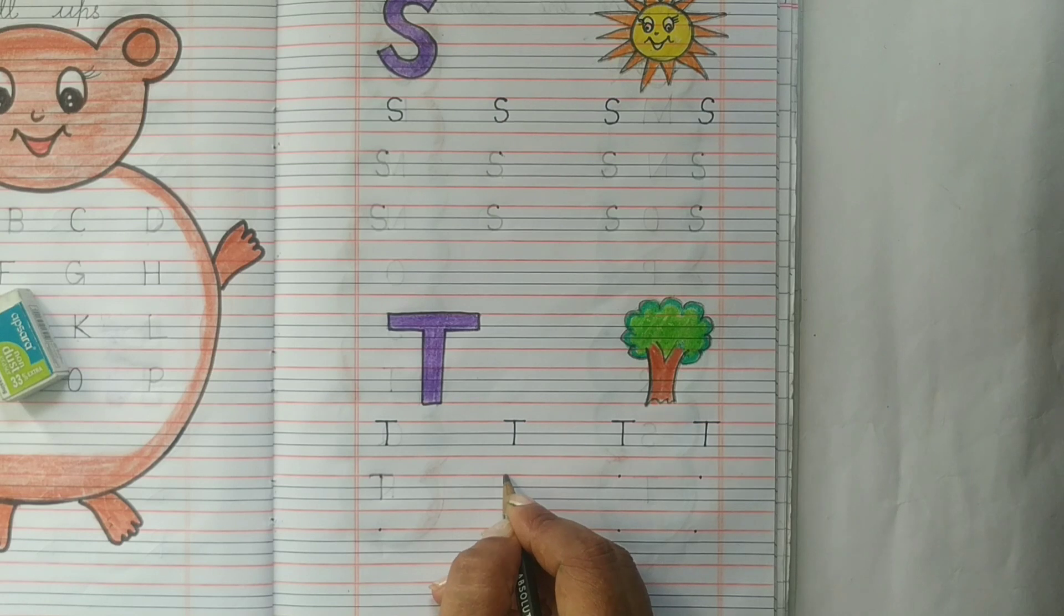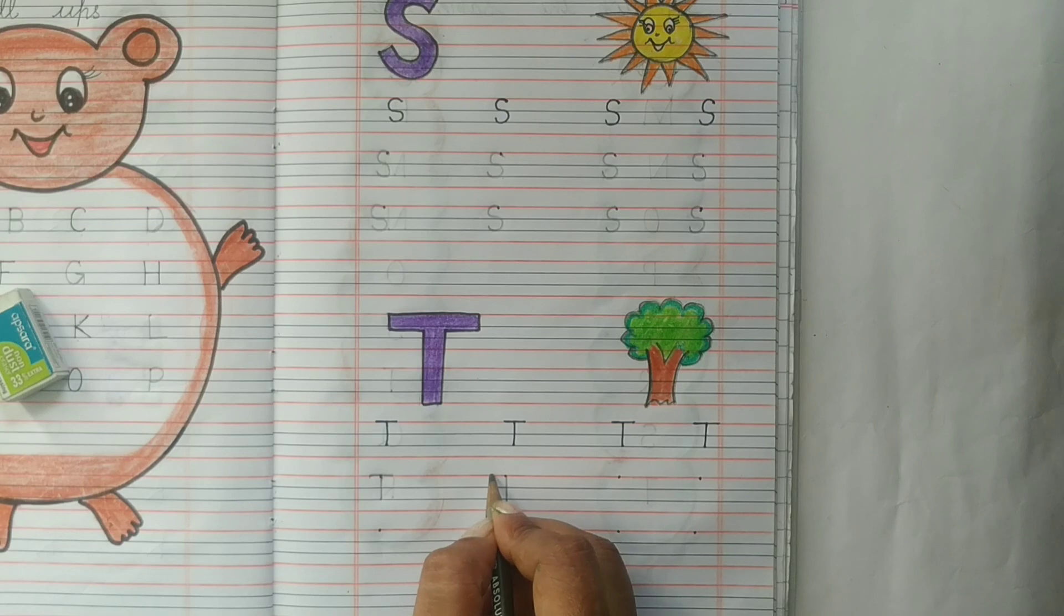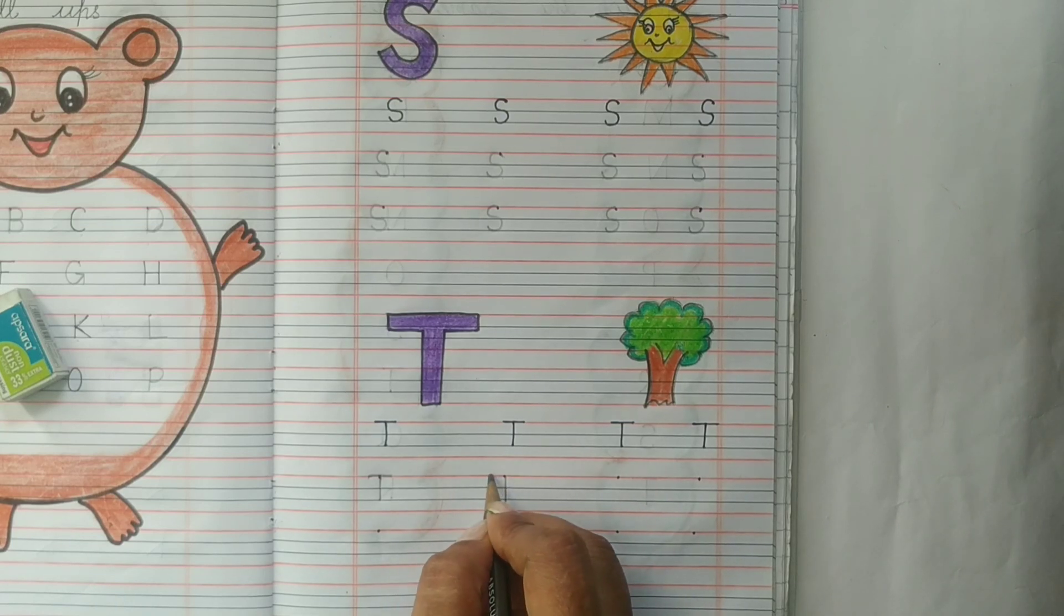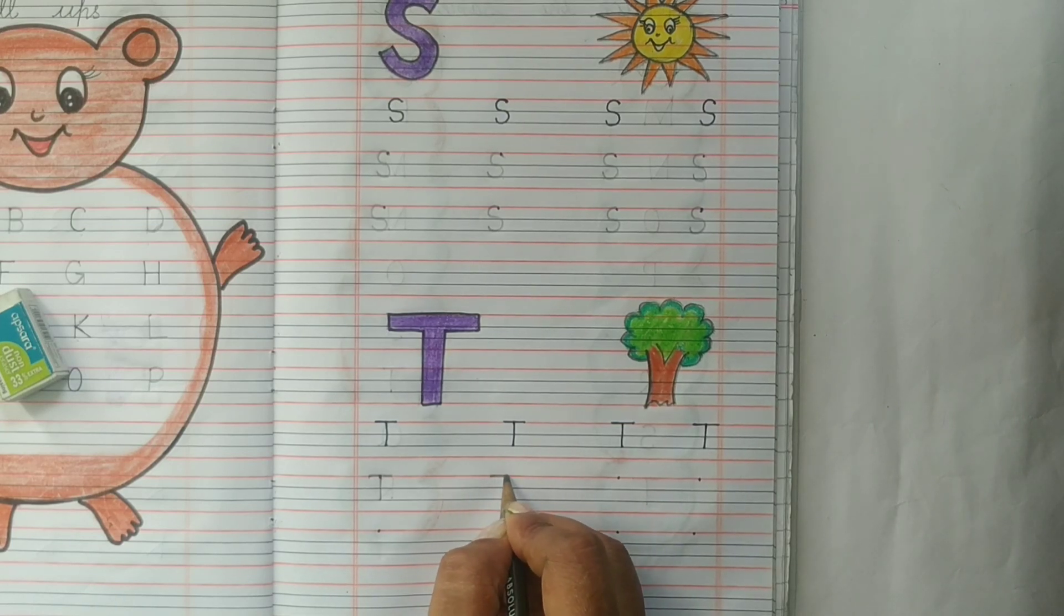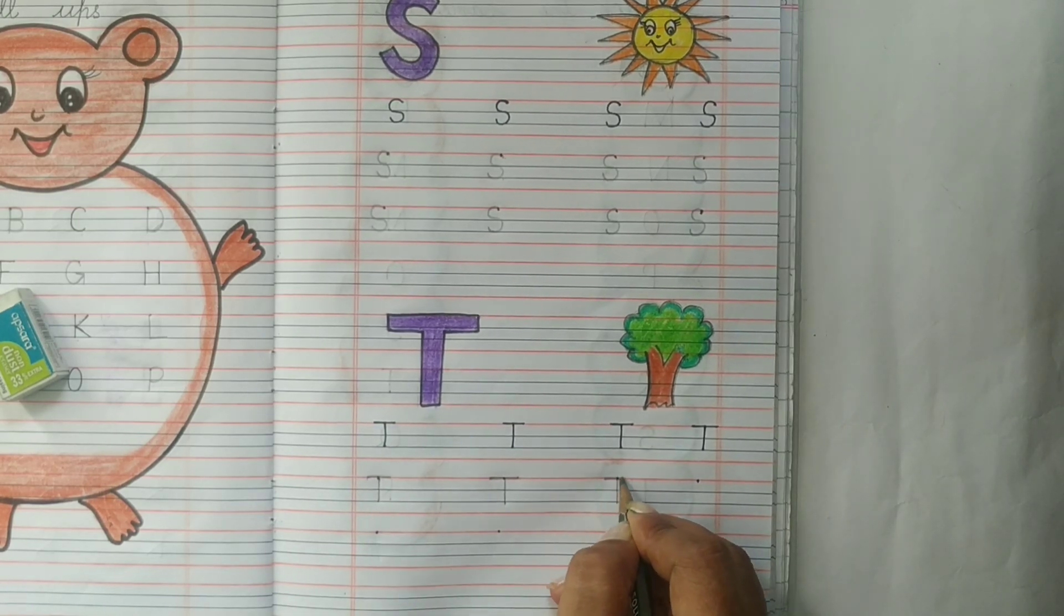Kya karna hai? Hamei top se start karna hai aur one standing line draw karna hai. This is letter T.